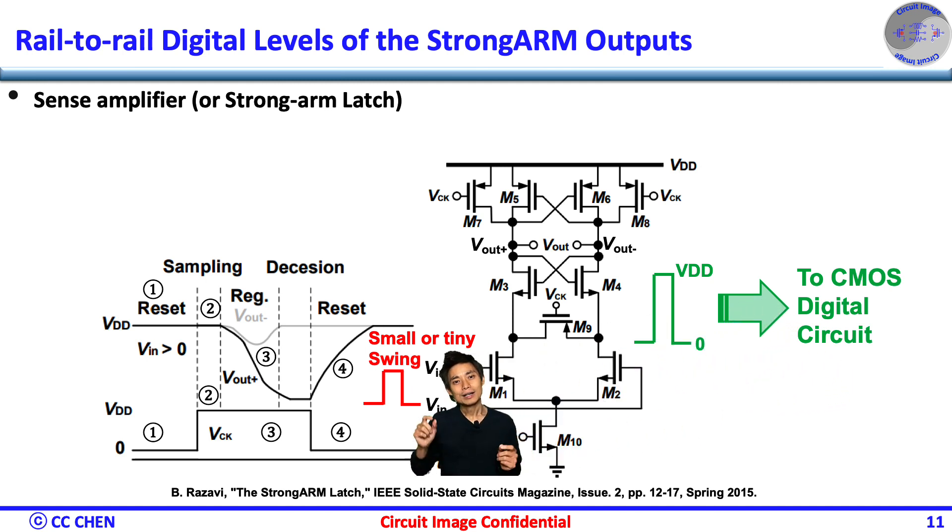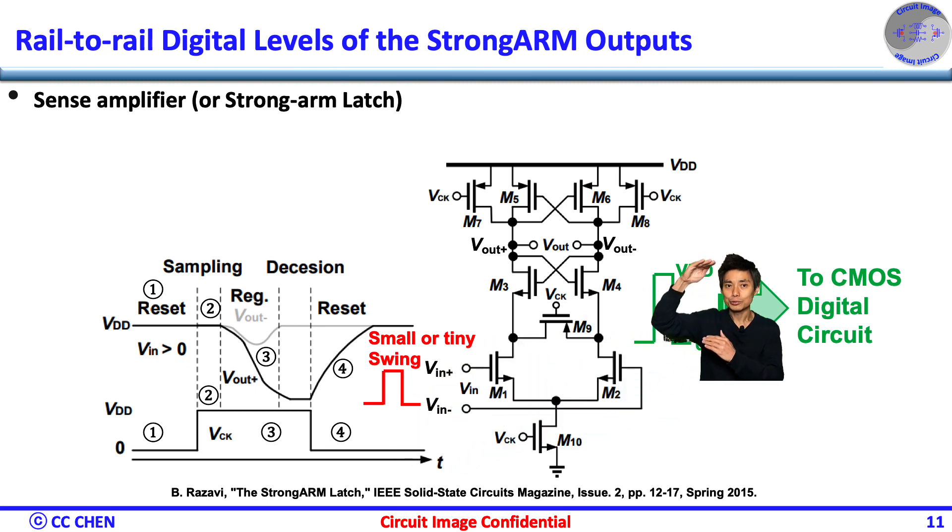Therefore, a tiny input analog swing was converted to the rail-to-rail digital level, which makes the strong-arm latch commonly used in analog-to-digital converter, sense amplifier, pre-amp circuits as the sampler.